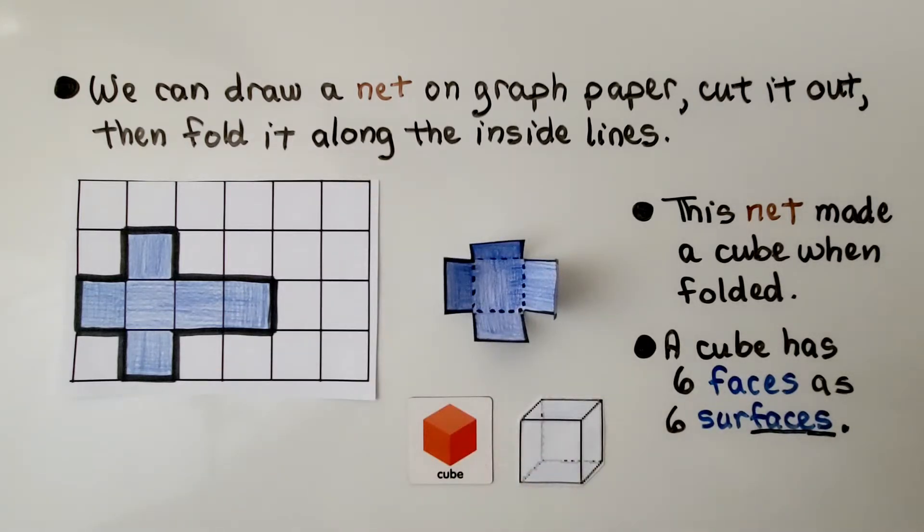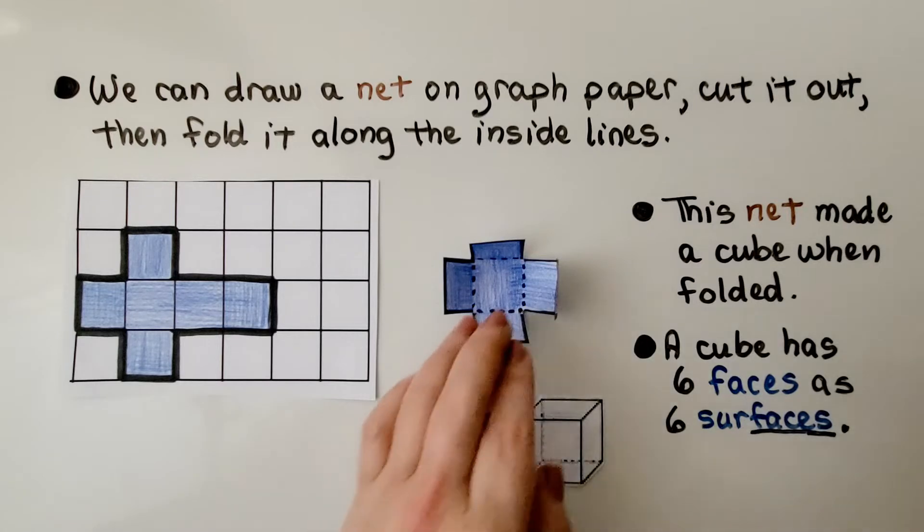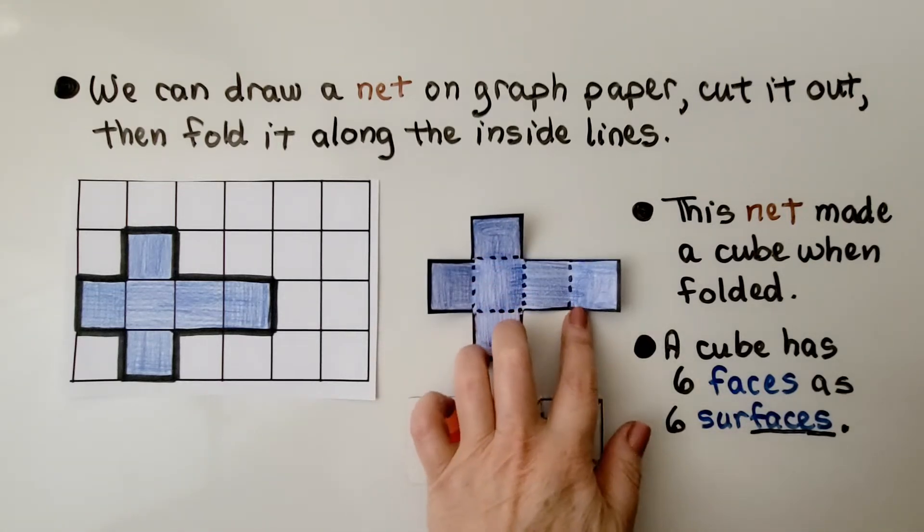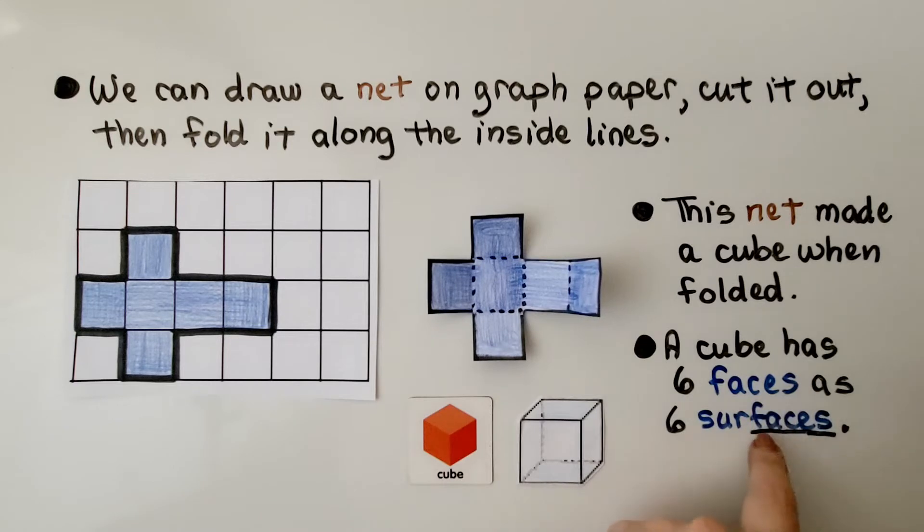This net made a cube when folded, and the cube has six faces or surfaces. Notice that the word surface has the word face in it.